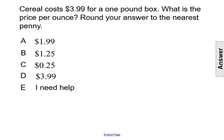Cereal costs $3.99 for a one-pound box. What is the price per ounce? Round your answer to the nearest penny.